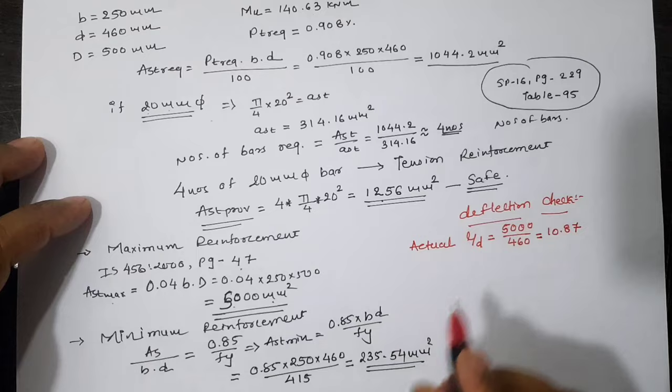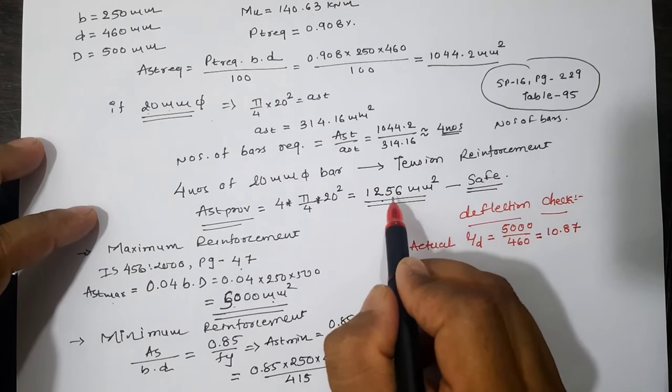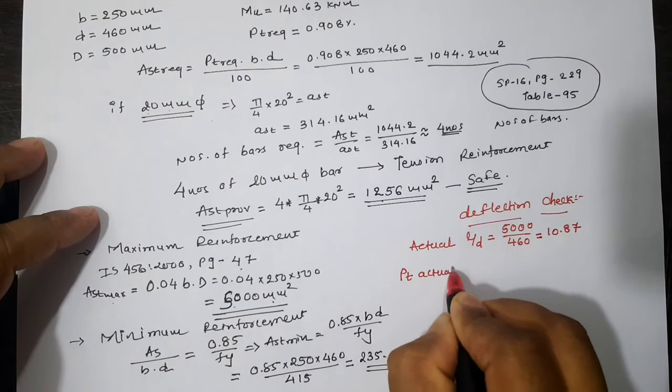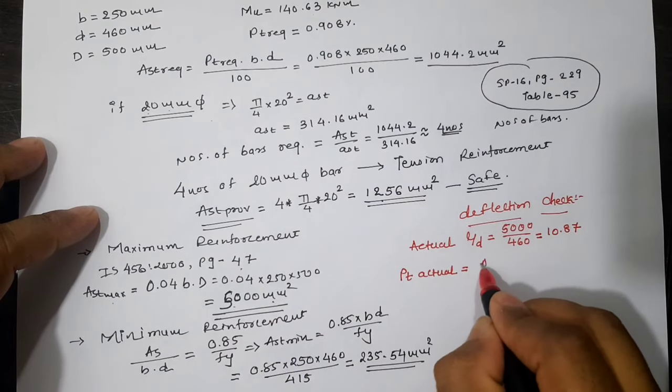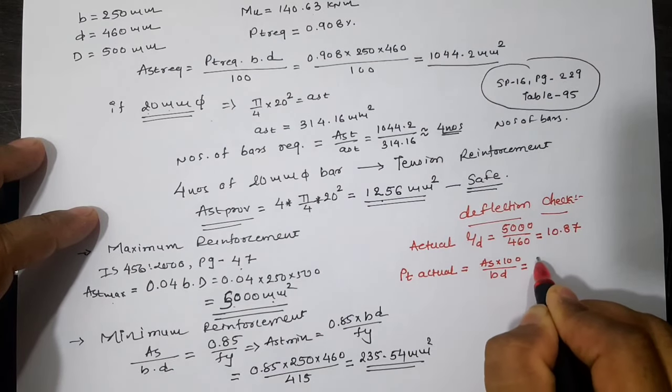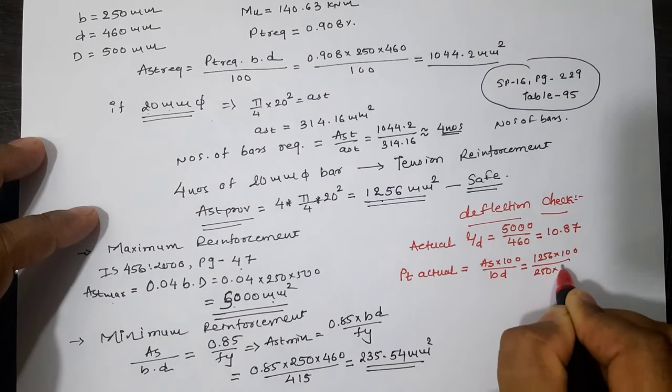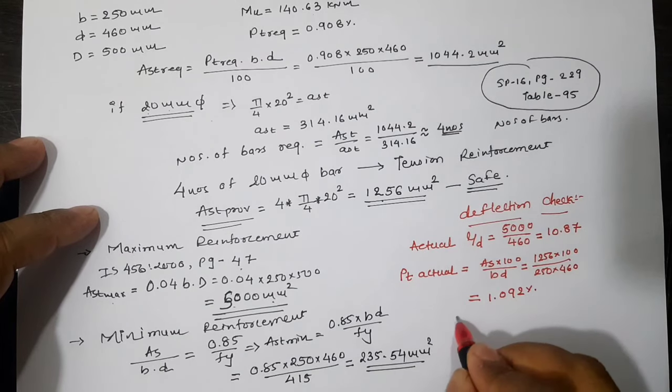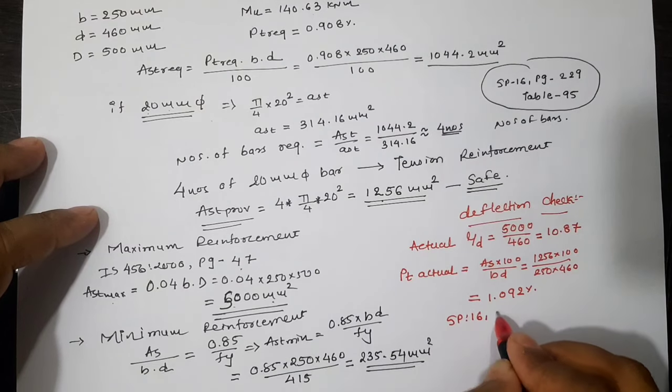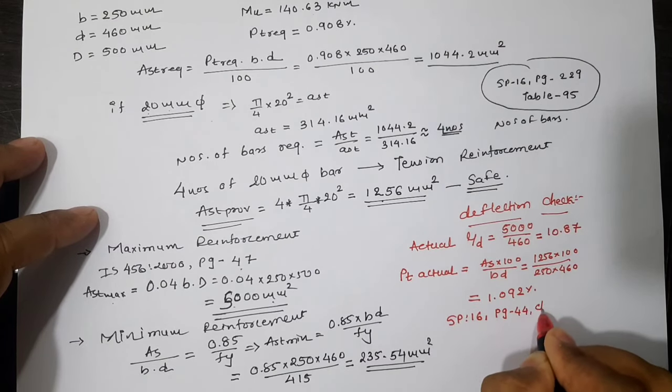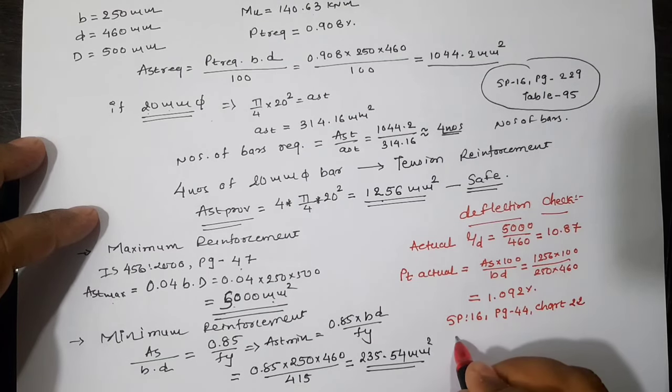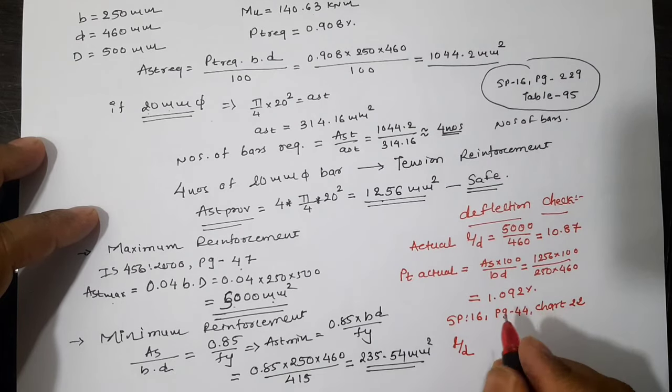Now we have provided total AST as 1256 mm², it means that actual Pt is 1256 divided by (250 × 460) × 100, which equals 1.092%.